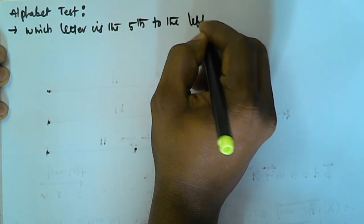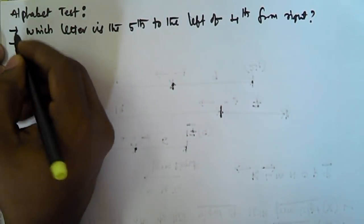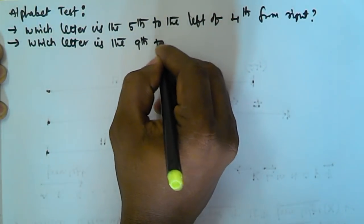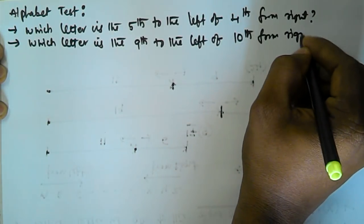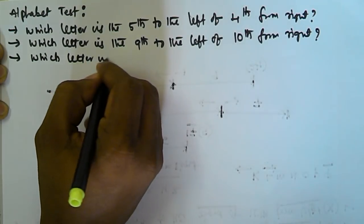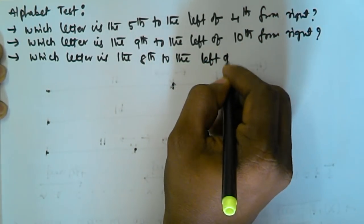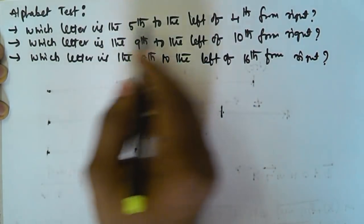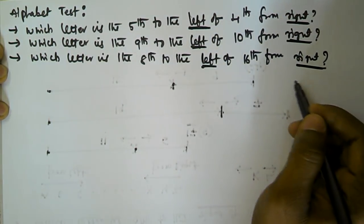The first problem: which letter is the fifth to the left of the fourth from the right? The second problem: which letter is the ninth to the left of the tenth from the right? The third problem: which letter is the eighth to the left of the sixteenth from the right? So let us begin. Here, this side is left and this side is right.